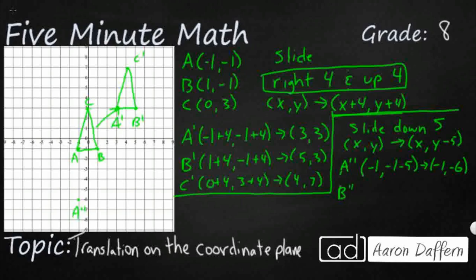So B double prime, which started as 1, negative 1. I got to take the 5 away. So that's going to be 1, negative 6 for my B double prime.